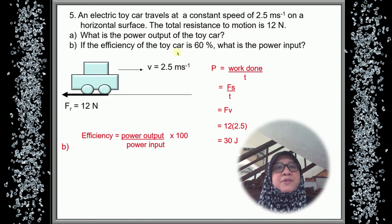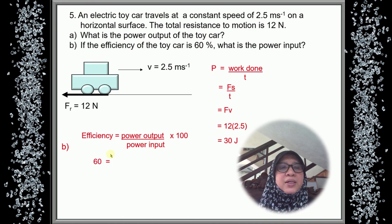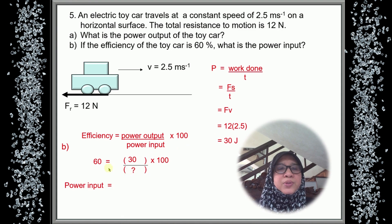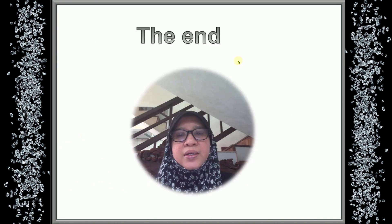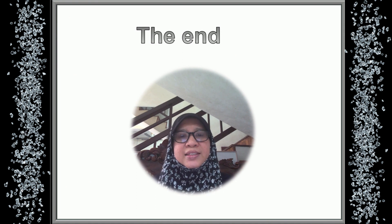For part B, the efficiency of the toy car is 60%. Using the formula for efficiency: power output divided by power input times 100. Substituting 60% and power output of 30 watts times 100 divided by power input, then cross-multiplying, we calculate power input as 50 watts. That's the answer for this question. We have now finished Tutorial 11. Bye-bye.